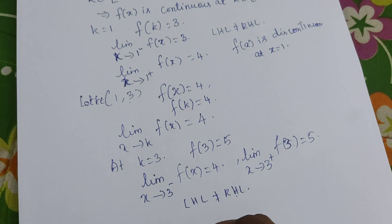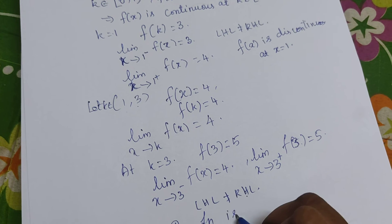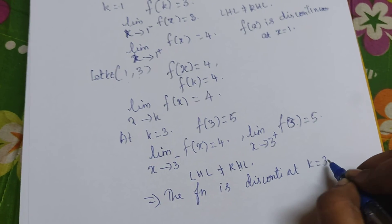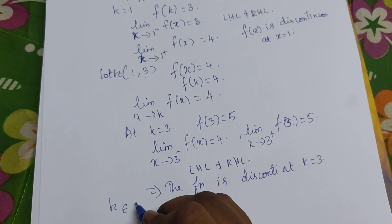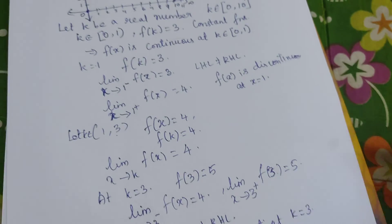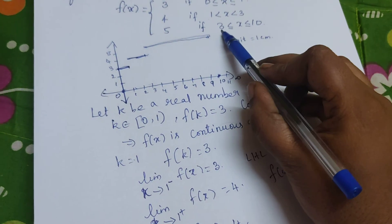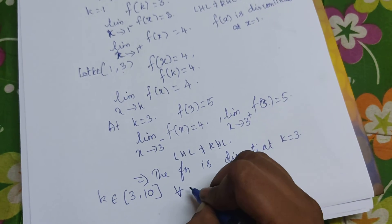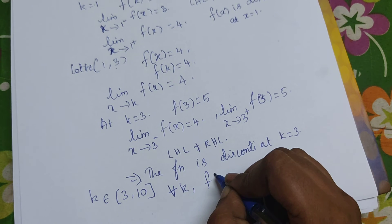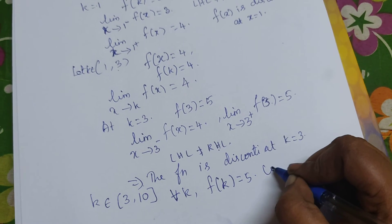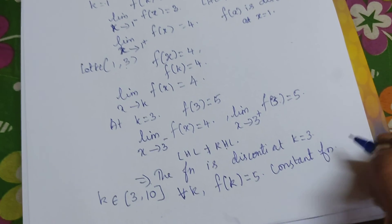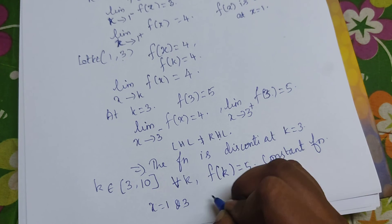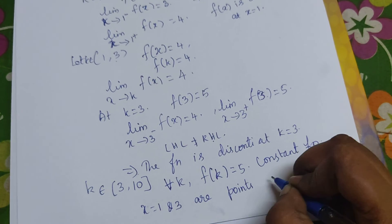Now let k belong to the interval (3, 10]. Here again it is a constant function — f(k) = 5 for all k in this interval, so the function is continuous there. Therefore, the function is discontinuous at x = 1 and x = 3, and these are the points of discontinuity.